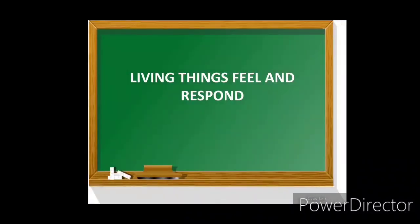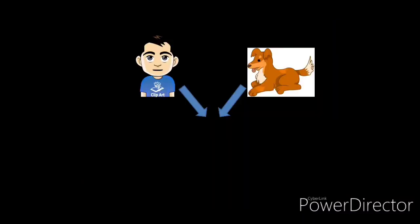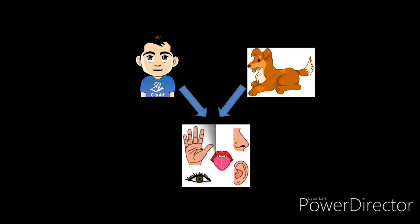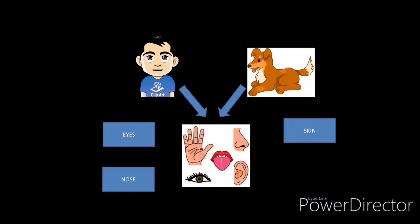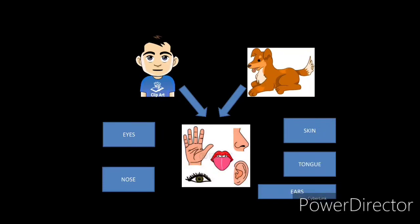Now we will study how living things feel and respond. Human beings and animals can feel through their sense organs. As you have studied in your previous class, there are five types of sense organs: eyes, nose, skin, tongue and ears. With the help of these five sense organs, human beings and animals can feel things around them.